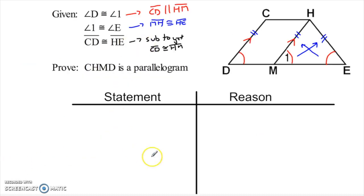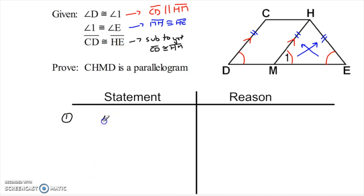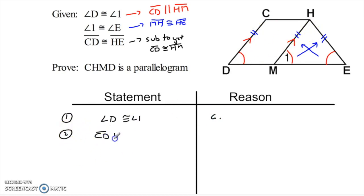So let's go ahead and write the proof up. We'll just go in order. Angle D is congruent to angle 1 — that was given — and that's going to allow me to say that these two lines, CD and MH, are parallel. So CD is parallel to MH.